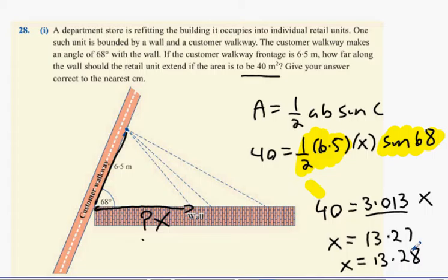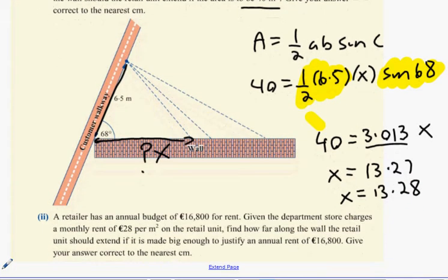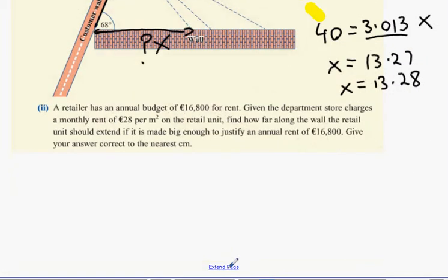Now, the next part is more of an arithmetic type question. He has an annual budget for this much for rent. Given that the apartment store charges a monthly rent of 28 per meter squared, find how far along the wall the retail unit should extend if you just make enough money just to justify an annual rent of 16,800. Give your answer correct to the nearest centimeter.